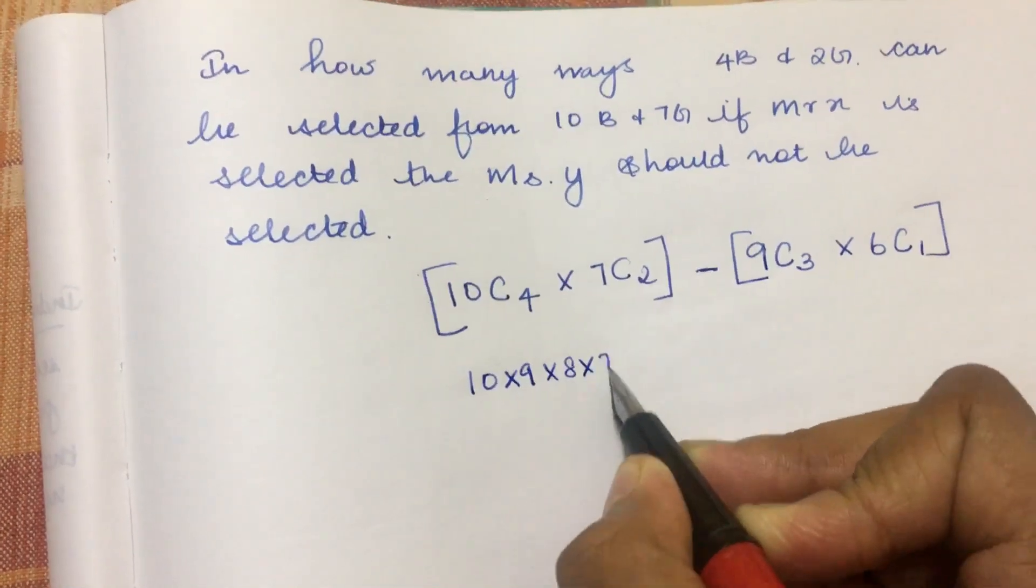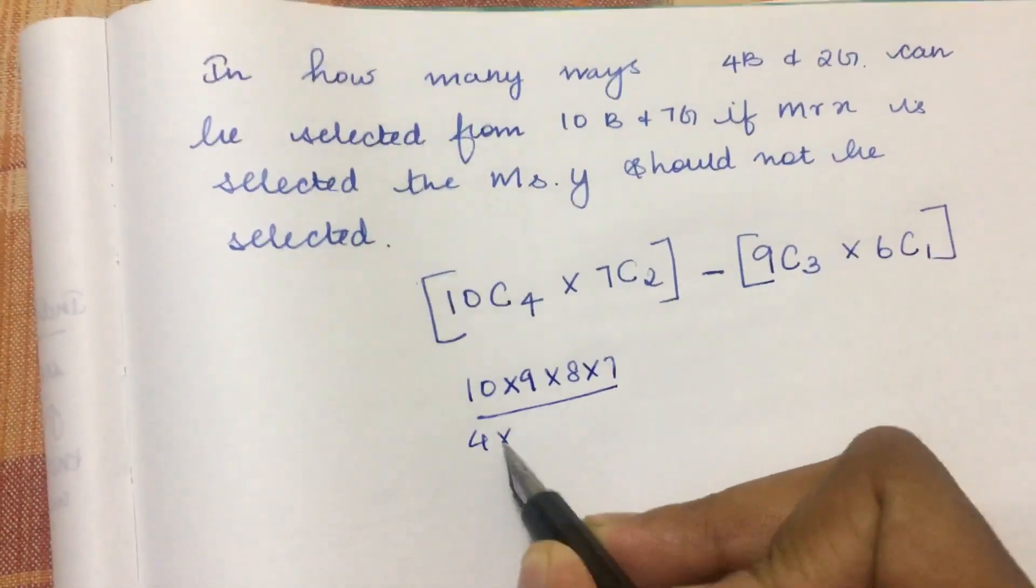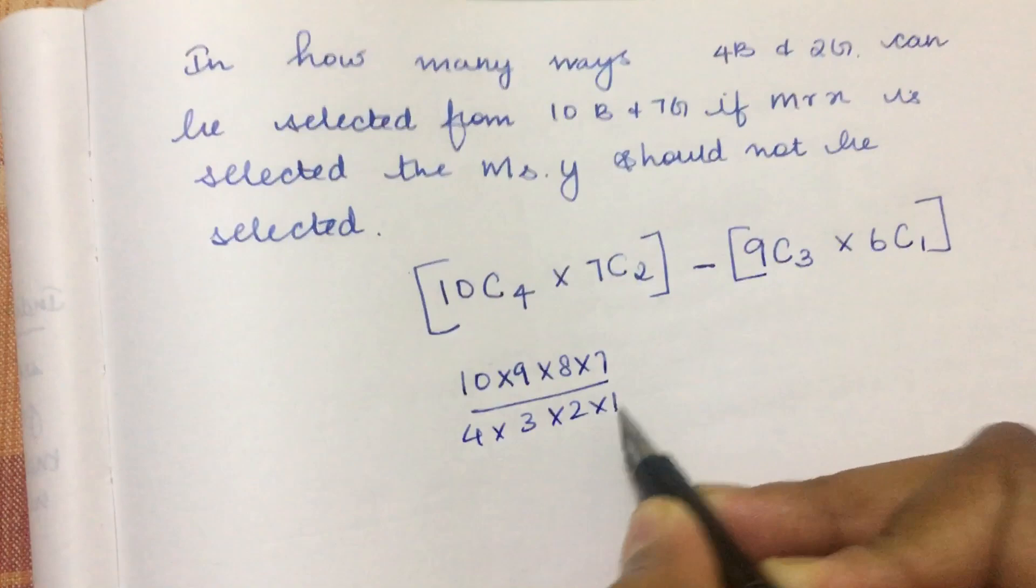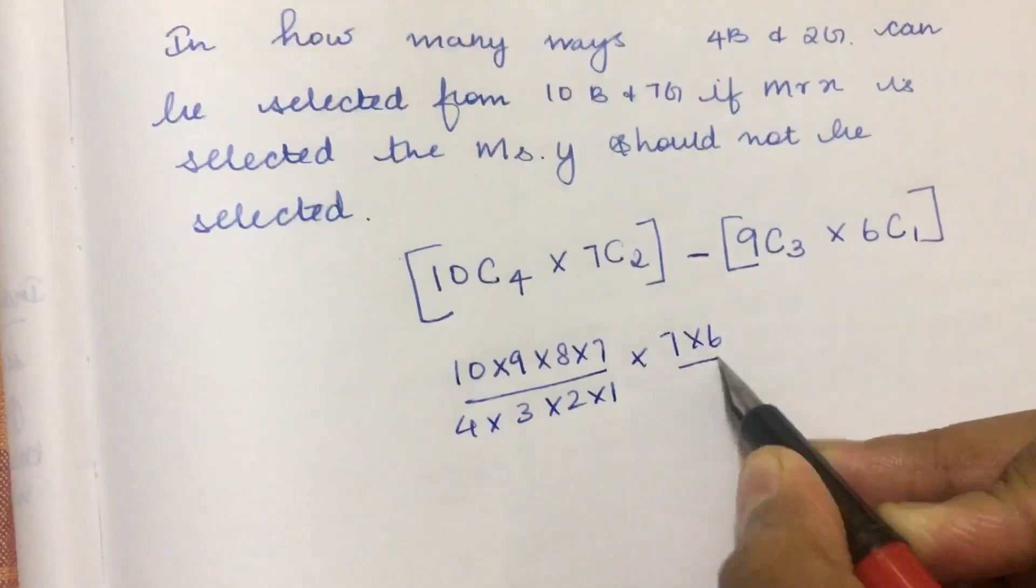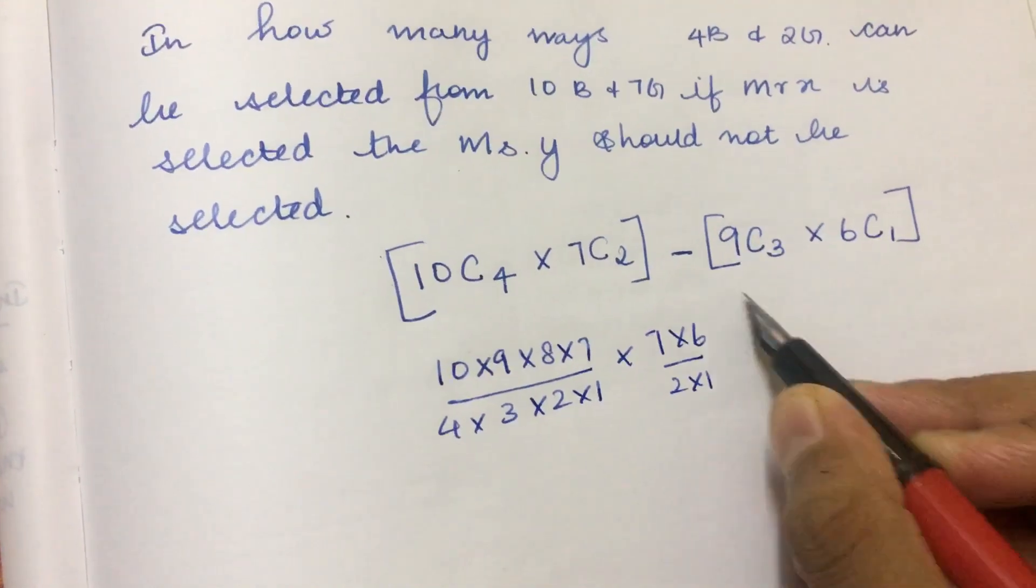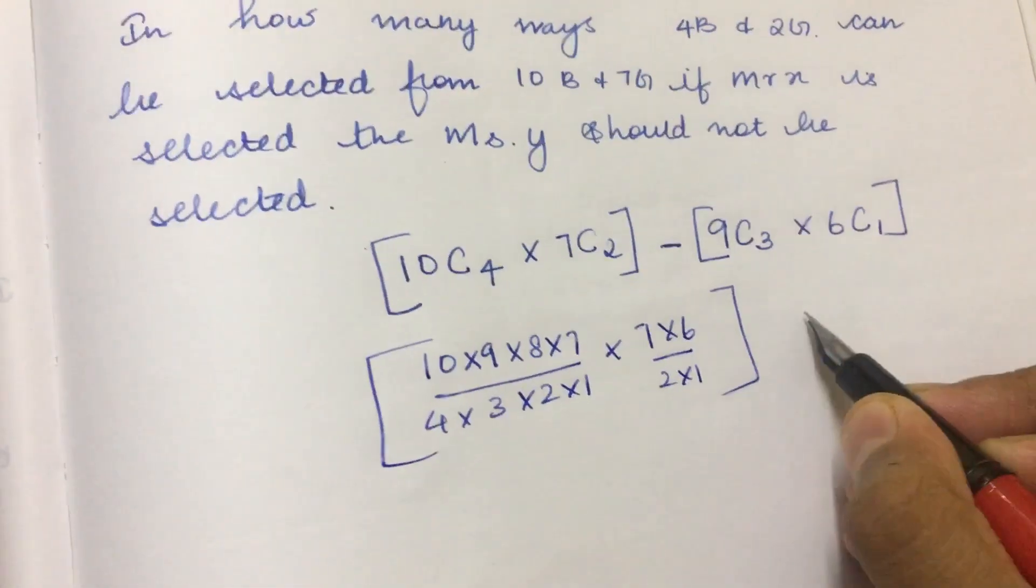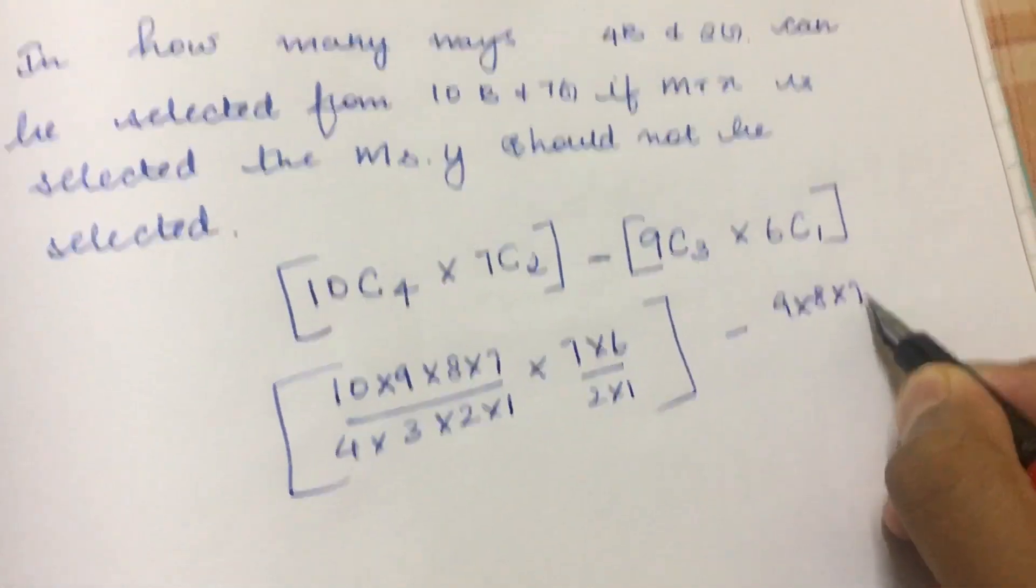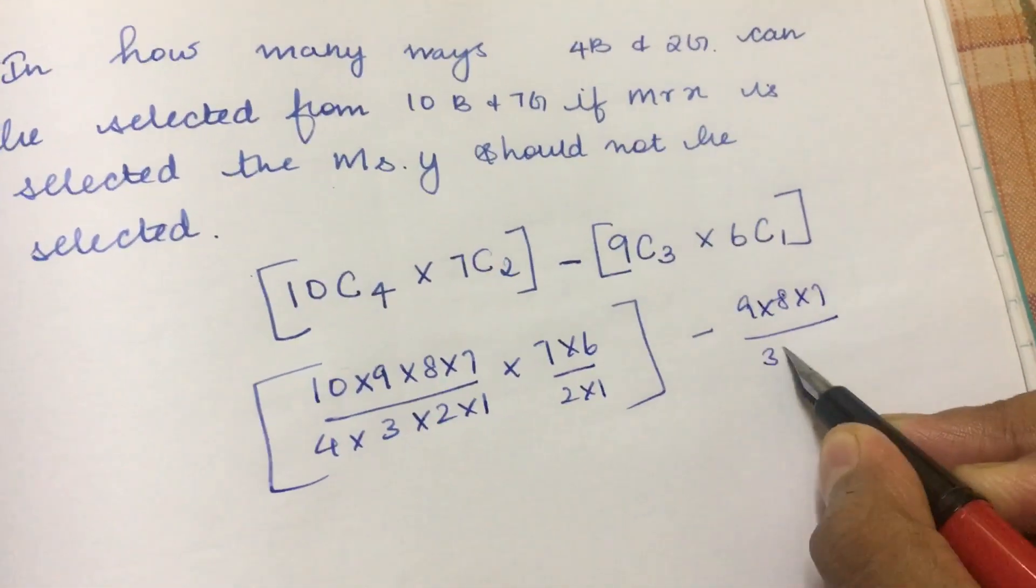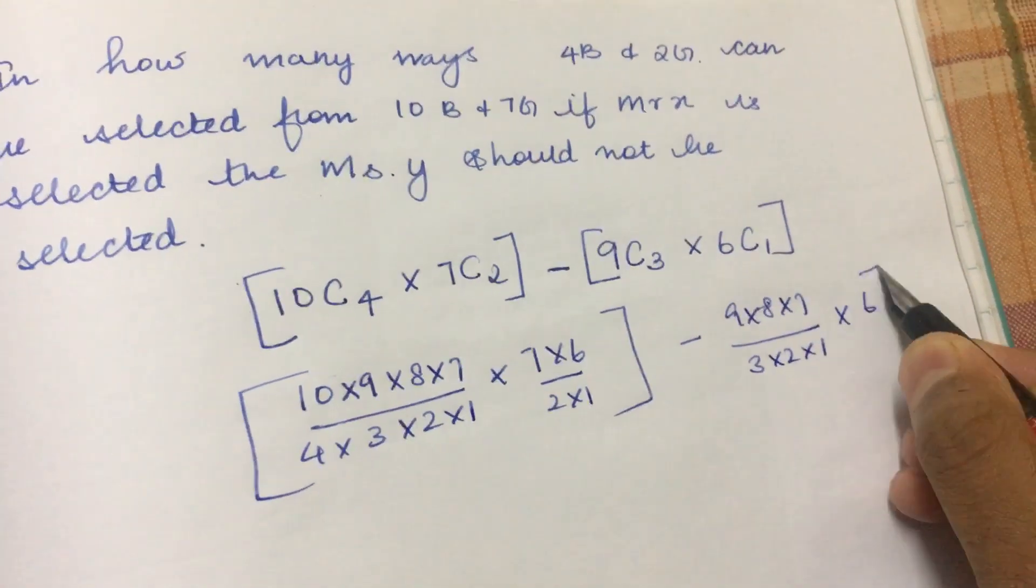10C4 is 10 times 9 times 8 times 7 divided by 4 times 3 times 2 times 1. Next is 7C2 which is 7 times 6 divided by 2 times 1. Then minus 9 times 8 times 7 divided by 3 times 2 times 1 times 6.